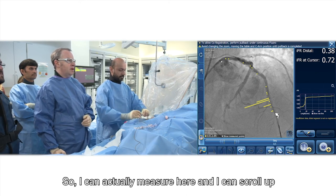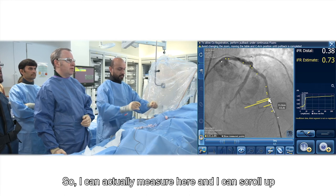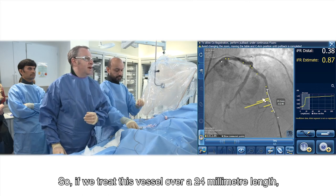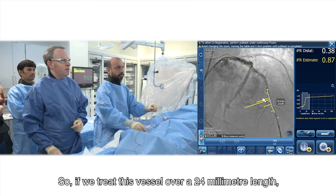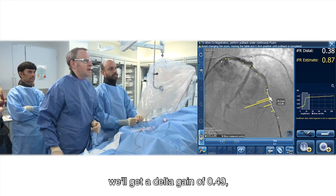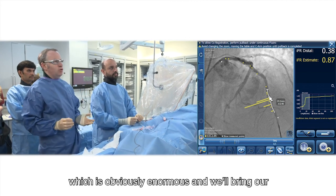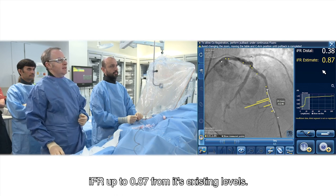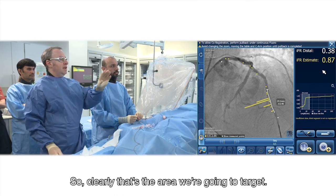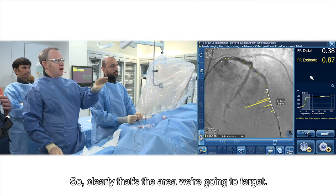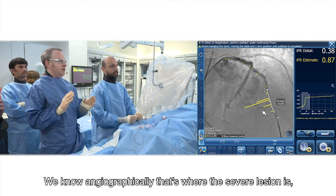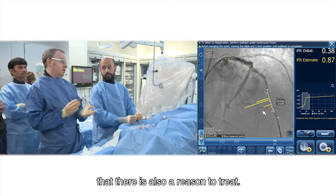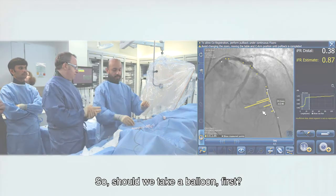So I can actually measure here, and I can scroll up starting to cover that sort of area. So if we treat this vessel over a 24mm length, we'll get a delta gain of 0.49, which is obviously enormous, and we'll bring our IFR up to 0.87 from its existing level. So clearly, that's the area we're going to target. We know angiographically that's where the severe lesion is, but we've demonstrated quite nicely physiologically that there's also reason to treat. So should we take a balloon first?